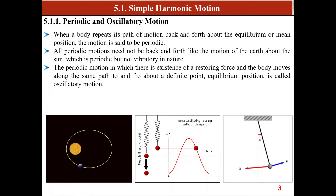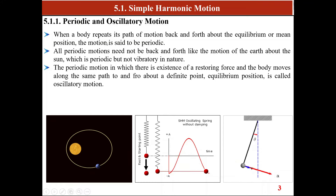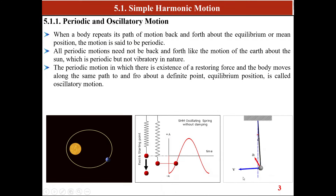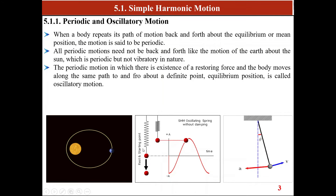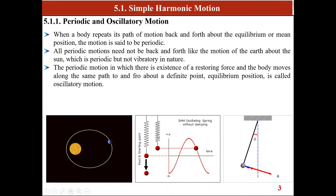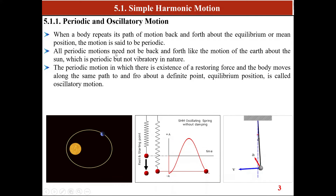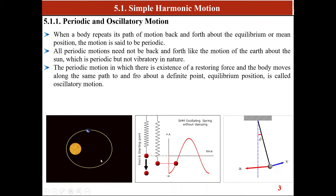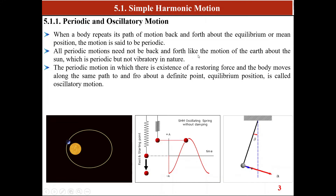When a body repeats its path of motion back and forth about the equilibrium position, the motion is said to be periodic. A simple pendulum has back-and-forth motion about equilibrium, and a spring-mass system oscillates up and down to maximum positive and negative amplitude — both are periodic motions. However, not all periodic motion is back-and-forth; for example, the motion of the Earth around the Sun is periodic but not back-and-forth.